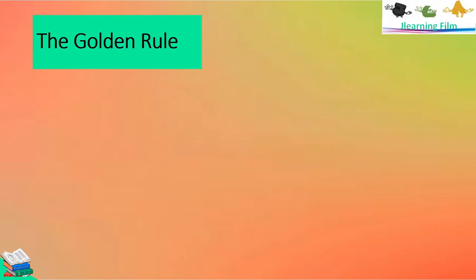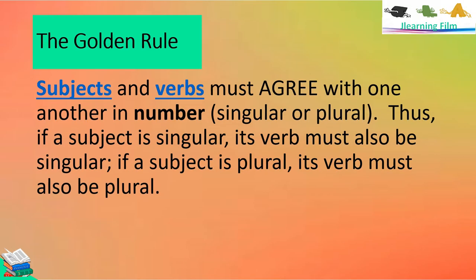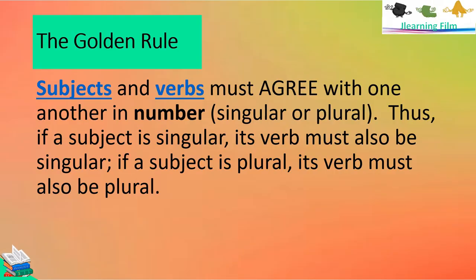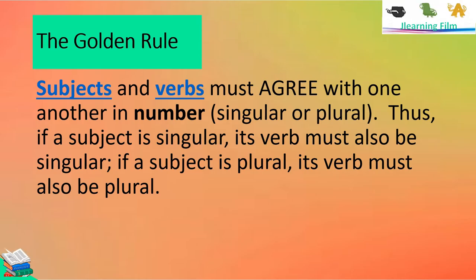Let's revisit the golden rule. Subjects and verbs must agree with one another in number — singular or plural. Thus, if the subject is singular, its verb must also be singular. And if a subject is plural, its verb must also be plural.